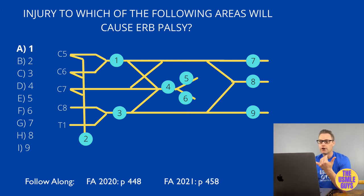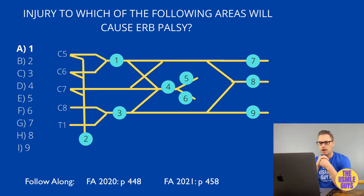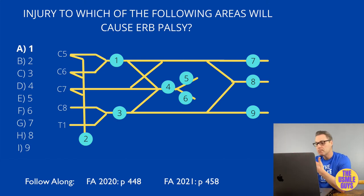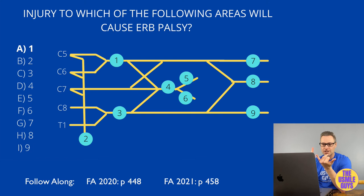Erb's palsy, also known as waiter's tip, is characterized by a deltoid and supraspinatus injury causing an abduction defect with the arm hanging by the side, a functional defect in lateral rotation resulting in medial rotation of the arm, and a defect in flexion and supination due to a biceps brachii defect resulting in an extended and pronated arm. In infants, the most common cause is injury during delivery causing lateral traction on the neck. In adults, the most common cause is trauma causing traction or tearing of the upper trunk, specifically affecting roots C5 and C6.